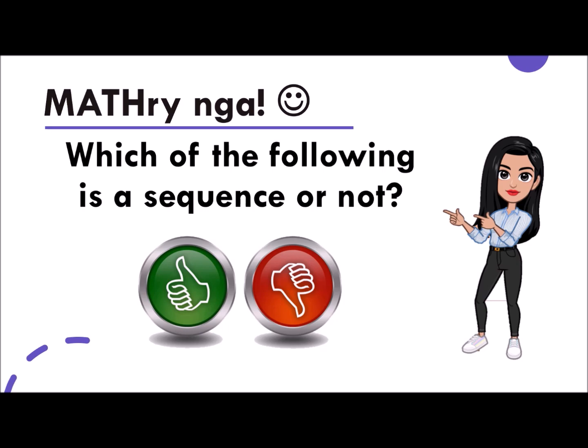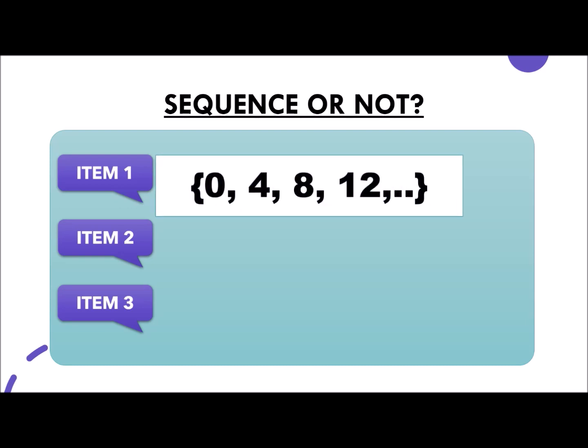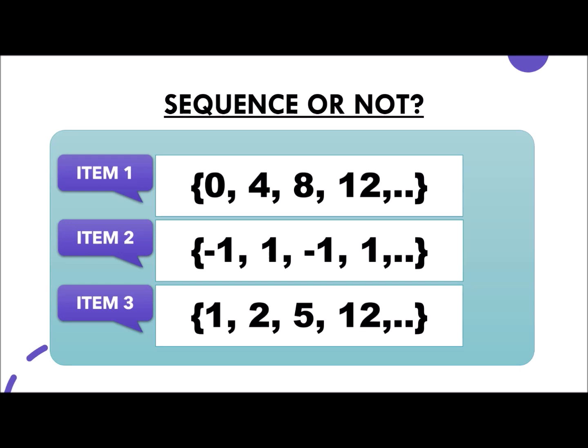Let's use the following symbols. For the first item, 0, 4, 8, and 12. Second, negative 1, 1, negative 1, 1. And the last item, 1, 2, 5, and 12. Again, kindly think the way it is being arranged. Is there a pattern behind these numbers?